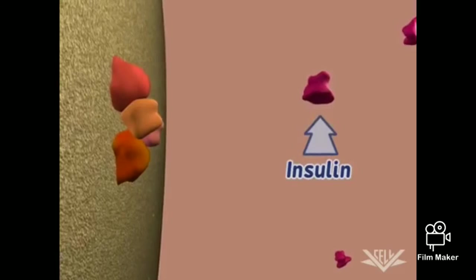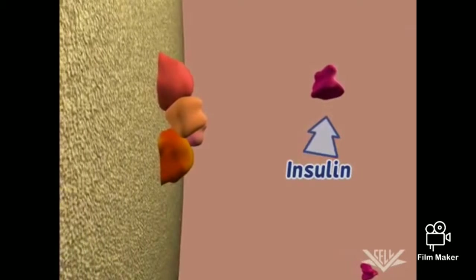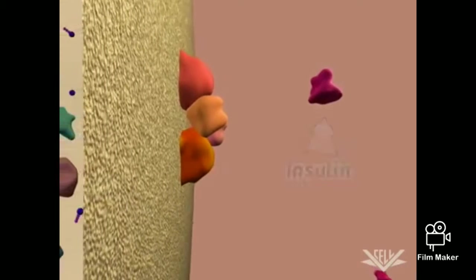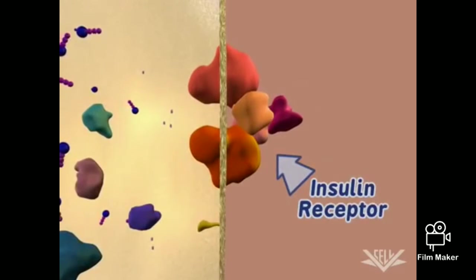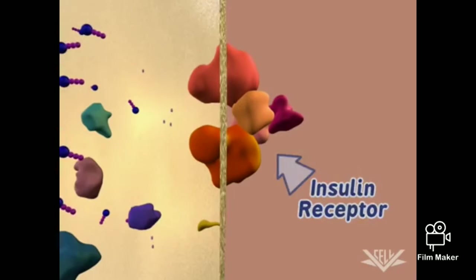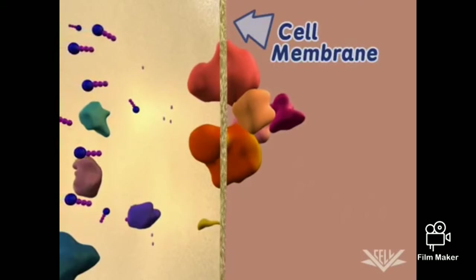When high levels of glucose are detected by beta cells in the pancreas, insulin is released by the cells. The insulin circulates through the bloodstream until it binds to an insulin receptor embedded in the cell membrane of a muscle, fat, or brain cell.